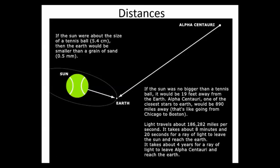Now if the sun was the size of a tennis ball, the Earth would be a little bit smaller than a grain of sand, and we would be 19 feet away from the sun. Alpha Centauri would be a lot further away. It would be 890 miles away. That's like going from Chicago to Boston, or from Springfield to the Rocky Mountains. So that's how far away Alpha Centauri is. The Earth would be 19 feet away from the sun if it was the size of a tennis ball, but Alpha Centauri would be way over in the Rocky Mountains.